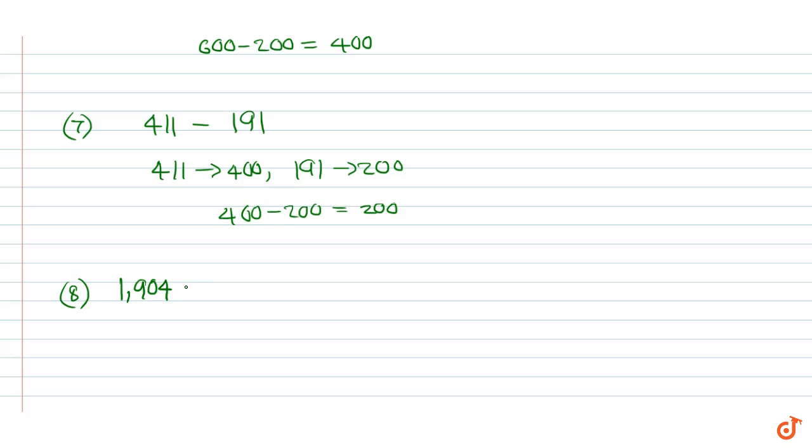Example 8: 1904 plus 2718. 1904 rounds up to 2000, 2718 rounds up to 3000. Therefore 2000 plus 3000 is equal to 5000.